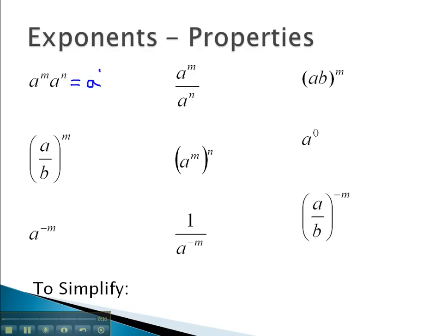The power rule says we add the exponents, m plus n. The quotient rule says we subtract the exponents, m minus n. The power rule says that the exponent goes onto each factor in the expression, noting that this only works if there is no adding or subtracting.